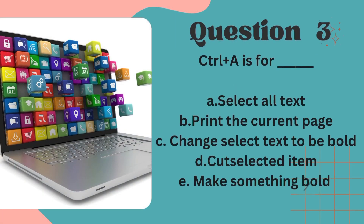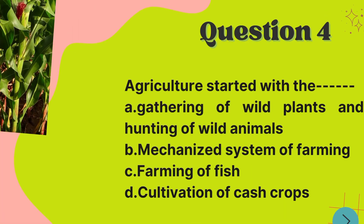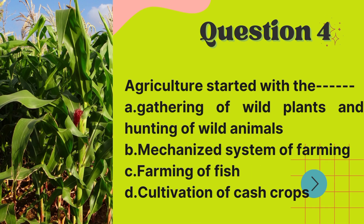The cursor is controlled by the mouse. Number three: Control plus A is for what? We have what are called shortcut keys, and Control+A is to select all text. If you want to select all text, you hold Control and A together and it will select all the text.